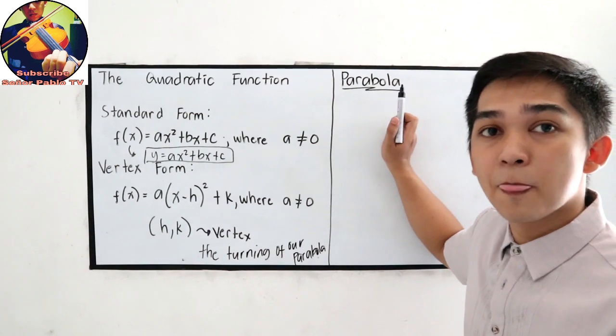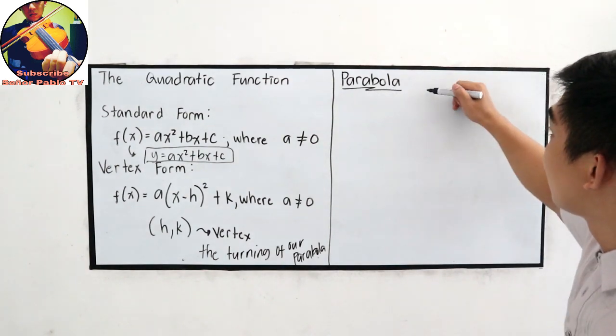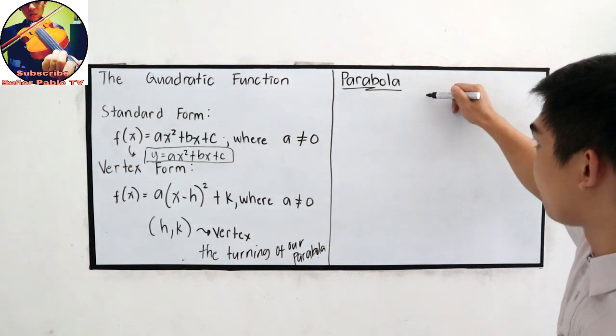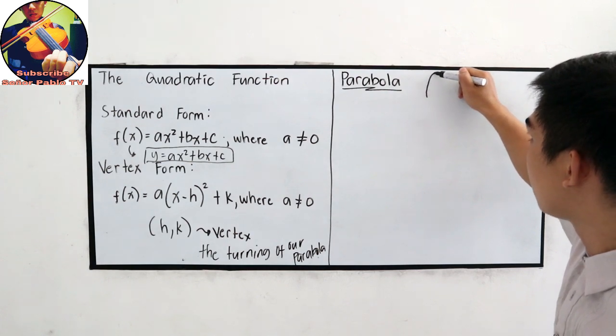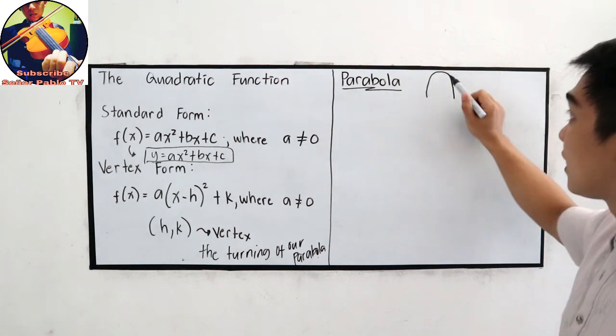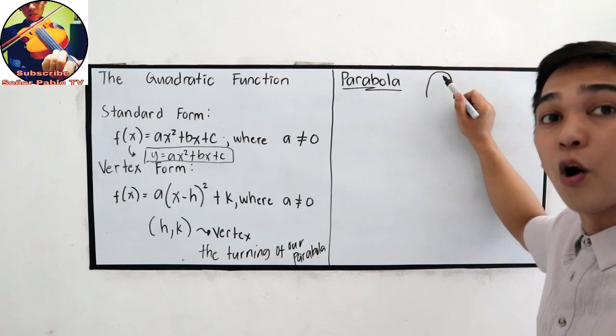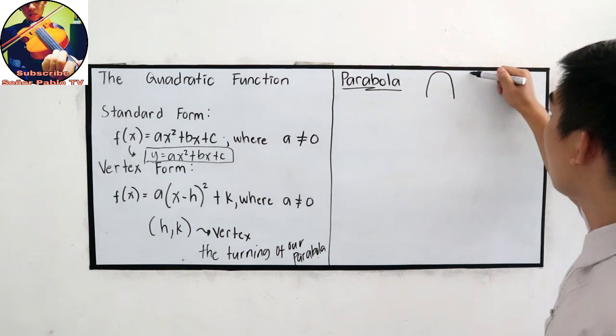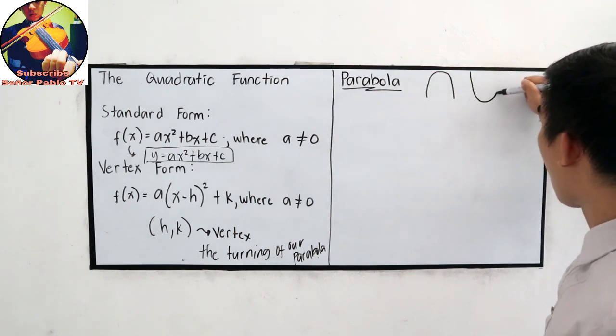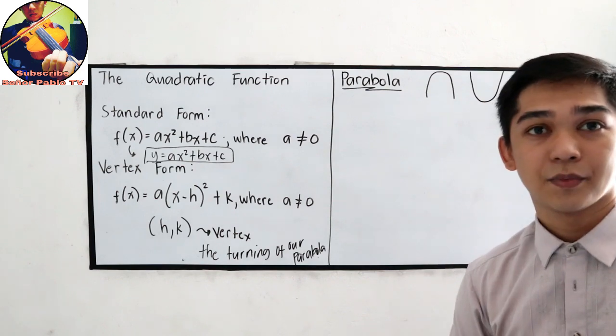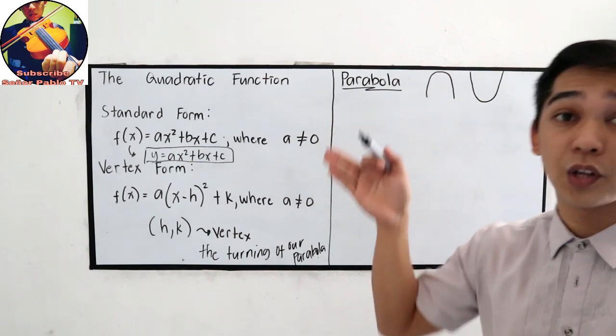Now, parabola, that is the curve, this is the graph of our quadratic function. It can be in this form, opens downward, and also opens upward. That is the graph of the quadratic function.